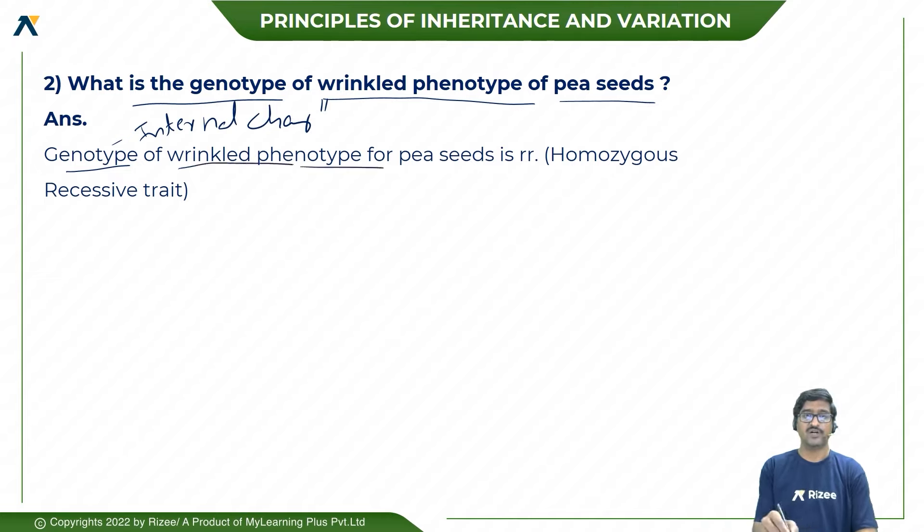Wrinkled phenotype of pea seeds, that is smaller. Why? Wrinkled is the recessive character.